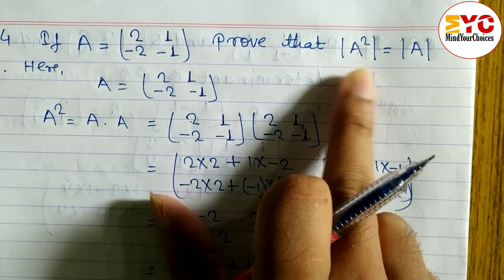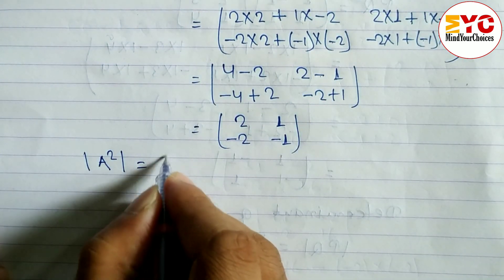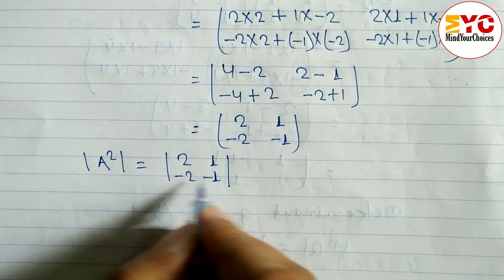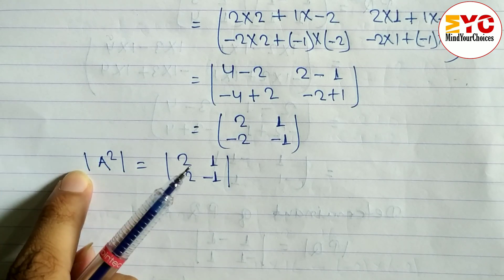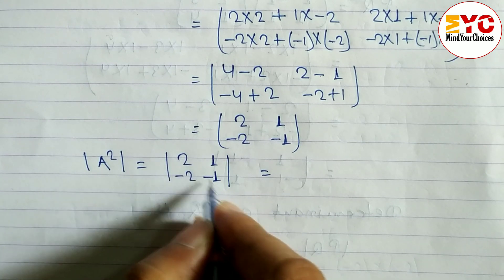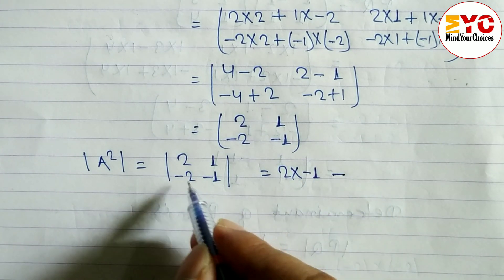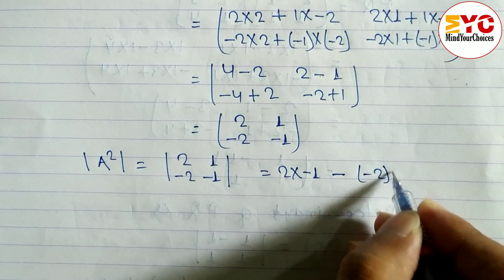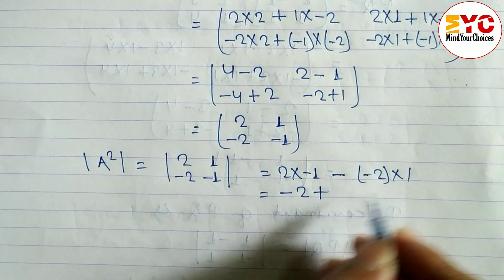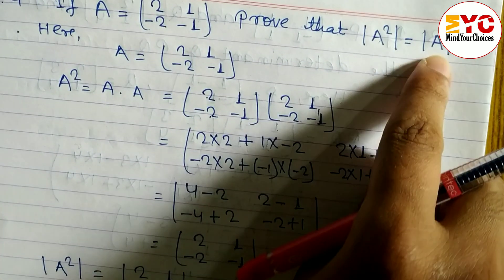Now in the LHS we have to find the determinant of A squared. A squared is [[2, 1], [-2, -1]]. Multiply the main diagonal: 2 into minus 1, minus the non-diagonal: minus 2 into 1. That gives minus 2 minus minus 2, which equals minus 2 plus 2, equals 0. So det(A²) = 0.